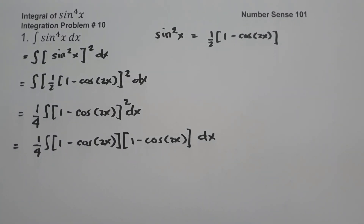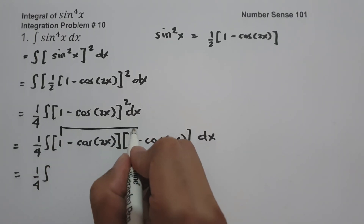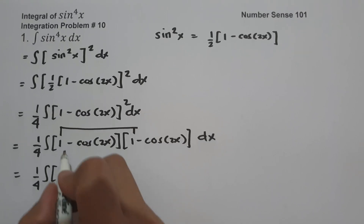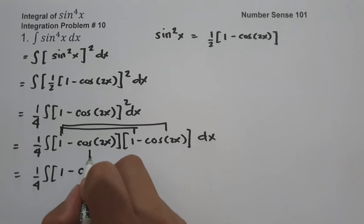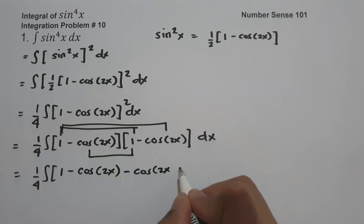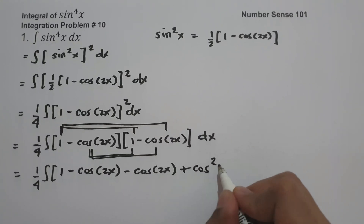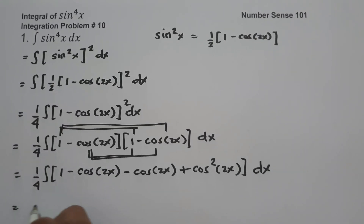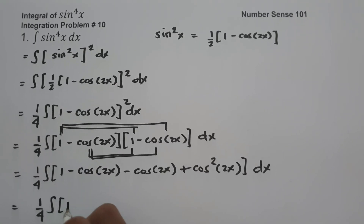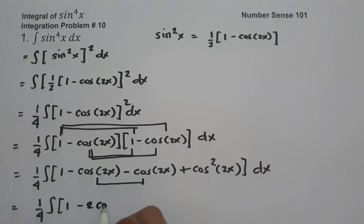Using the FOIL method: 1 times 1 is 1; 1 times negative cosine 2x is negative cosine 2x; negative cosine 2x times 1 is negative cosine 2x; and negative cosine 2x times itself is positive cosine²(2x). Combining like terms, we get one fourth times the antiderivative of 1 minus 2 cosine 2x plus cosine²(2x) dx.